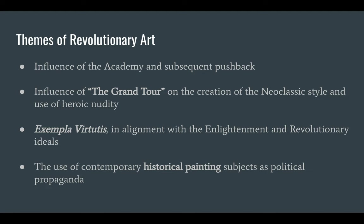Some of the themes I've identified in revolutionary art are as follows: the influence of the academy — there are structured schools, different levels and tiering of how art is appreciated. A top-tier choice is historical painting, which we see a lot of in the lectures from this week. Historical painting originally from antiquity, and then ending in contemporary historical paintings used as a kind of allegory.